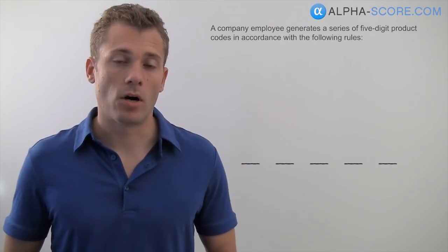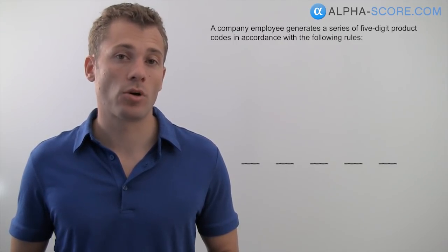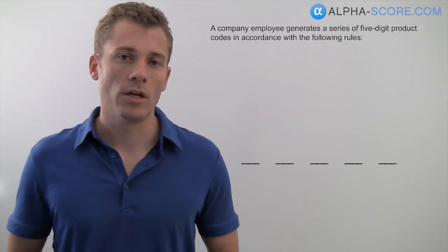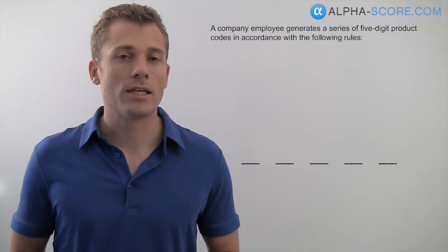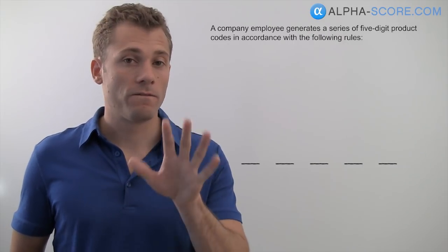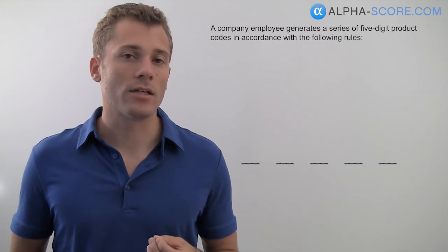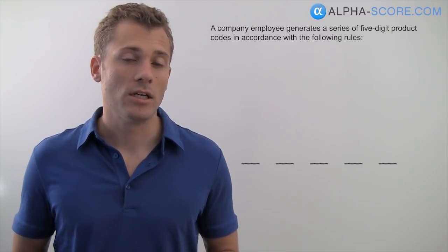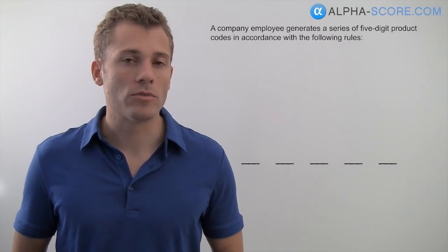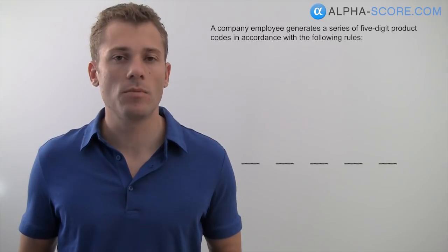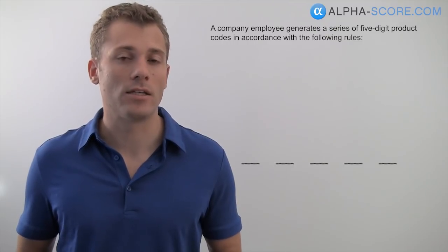Our introductory paragraph tells us that a company employee generates a series of five-digit product codes in accordance with the following rules. So we've got five digits going into each code. This tells us we're going to have to place our entities — our digits — in order from first through to fifth. Like all logic games, you want to put up placeholders: simple lines that represent where you're going to put your entities, which in this case are our digits.